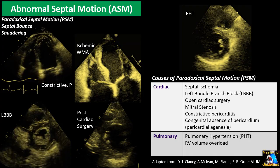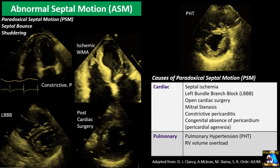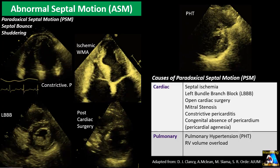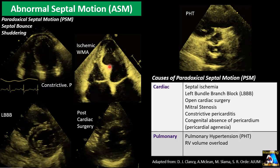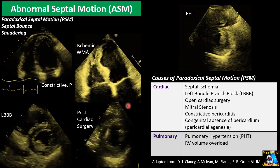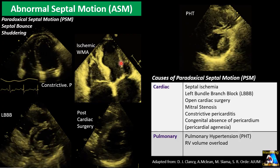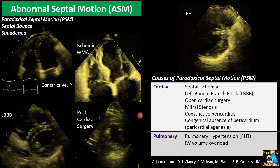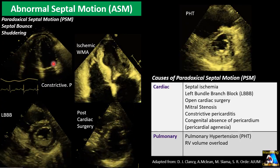Unlike other walls, the septum is between the two ventricles — right and left. Any changes in volume, pressure, or timing of contraction on either side can affect the function and movement of the septum. We call this abnormal septal motion. In some literature and conditions it is also called paradoxical septal motion, septal bounce, or shodding — all of which I will explain.